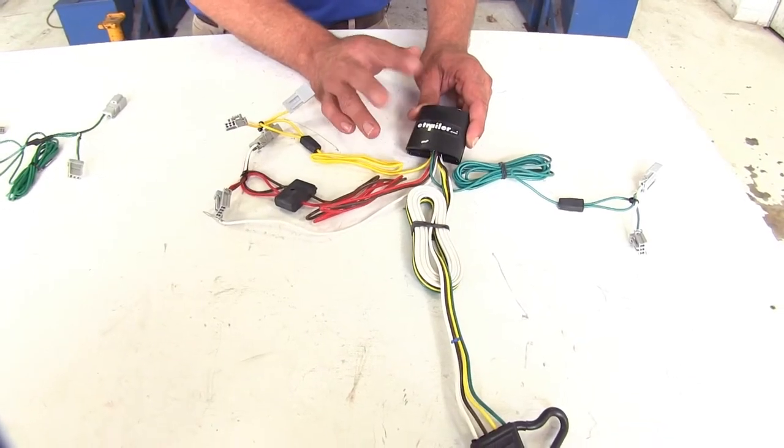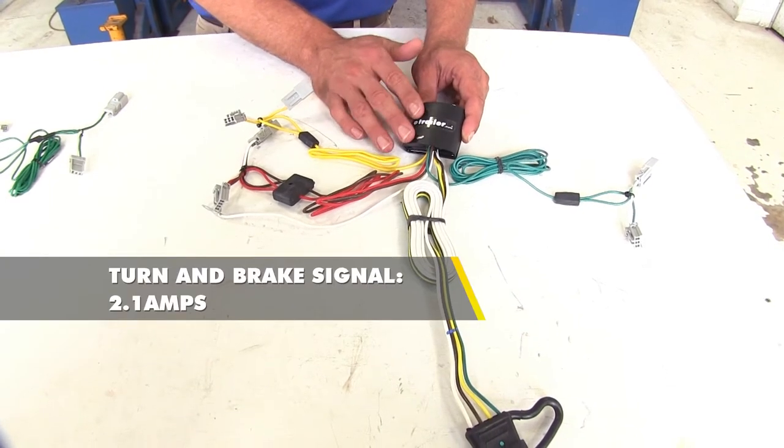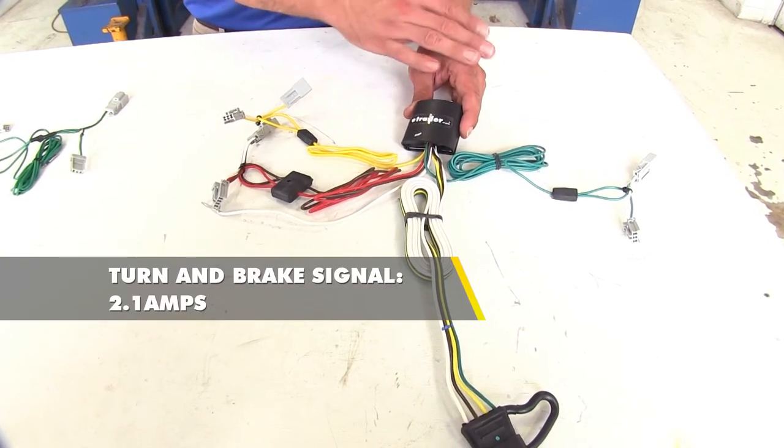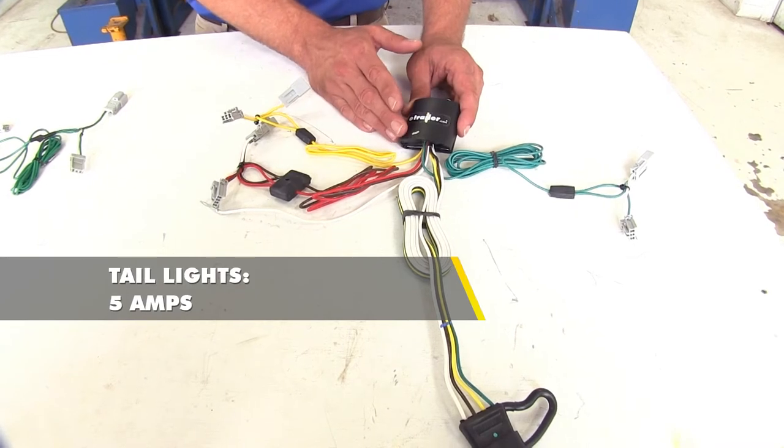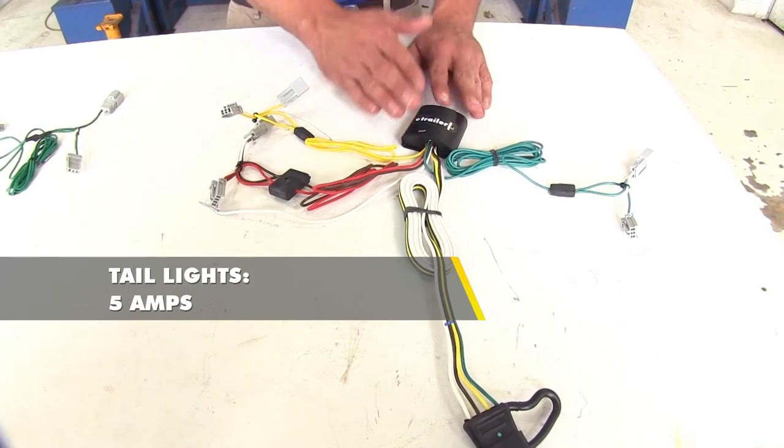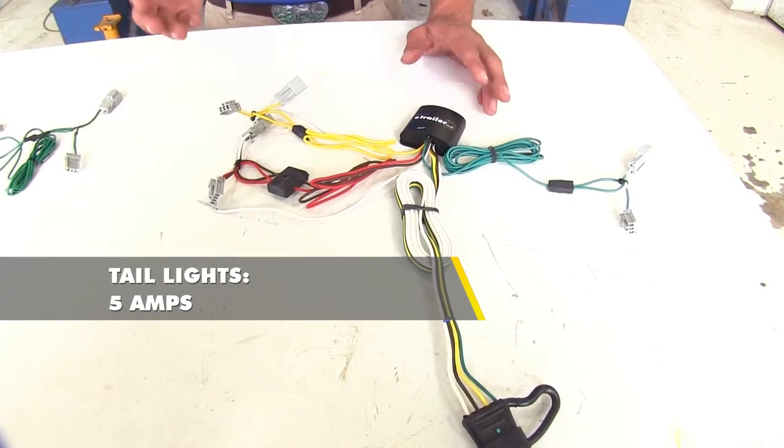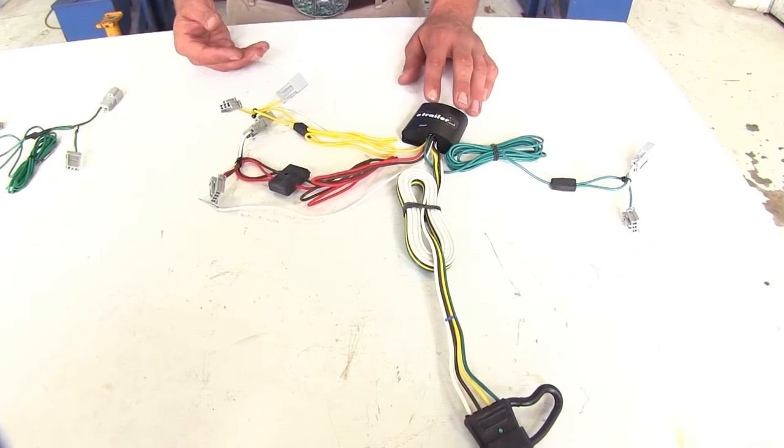The power supply on our Tekonsha is going to be 2.1 amps for the turn and brake signal per side and 5 amps for our taillights. That should be more than enough to power anything you're probably going to be putting behind your Civic.